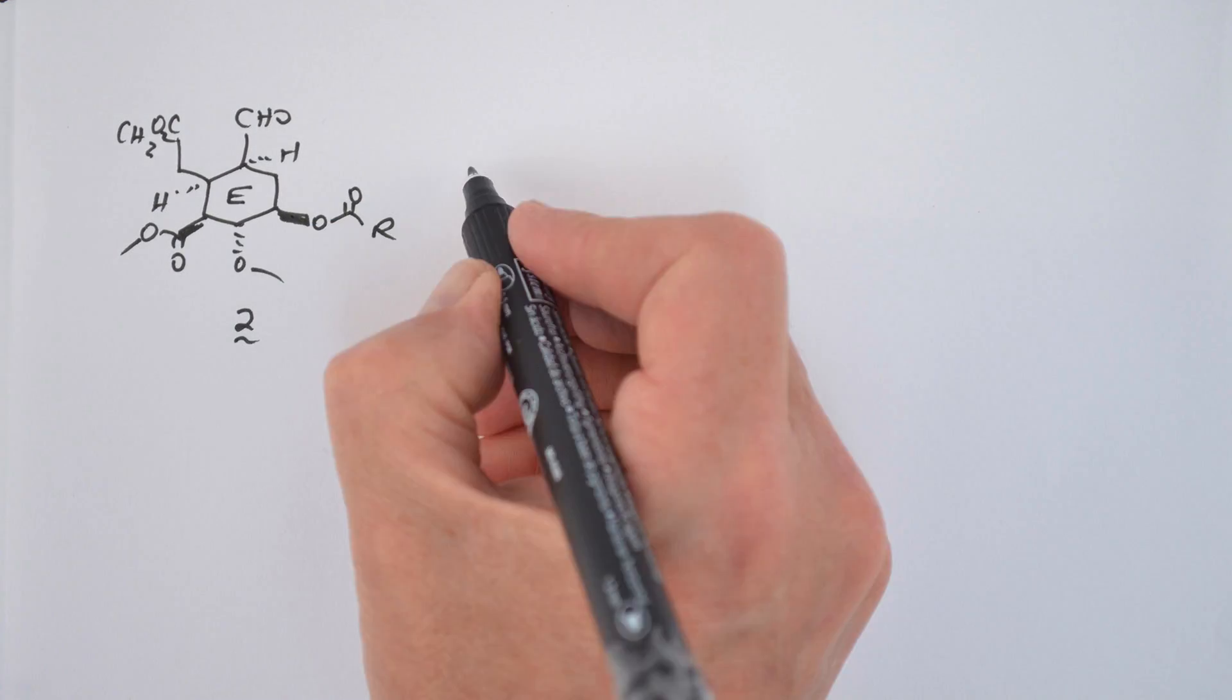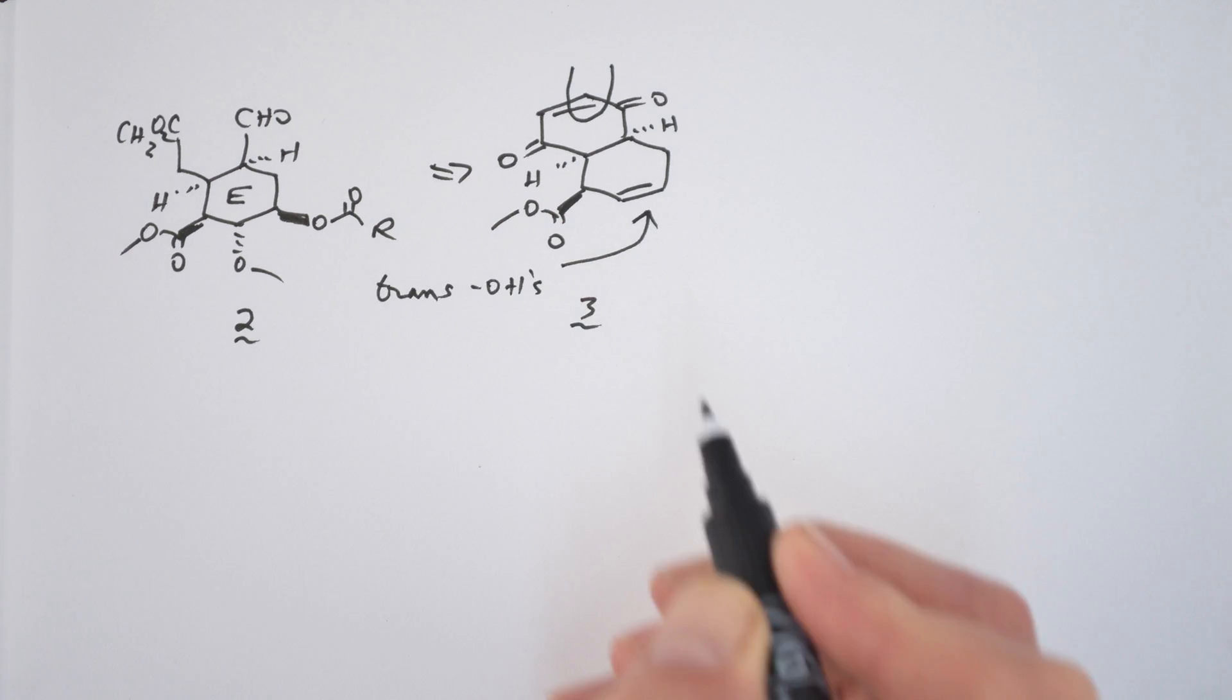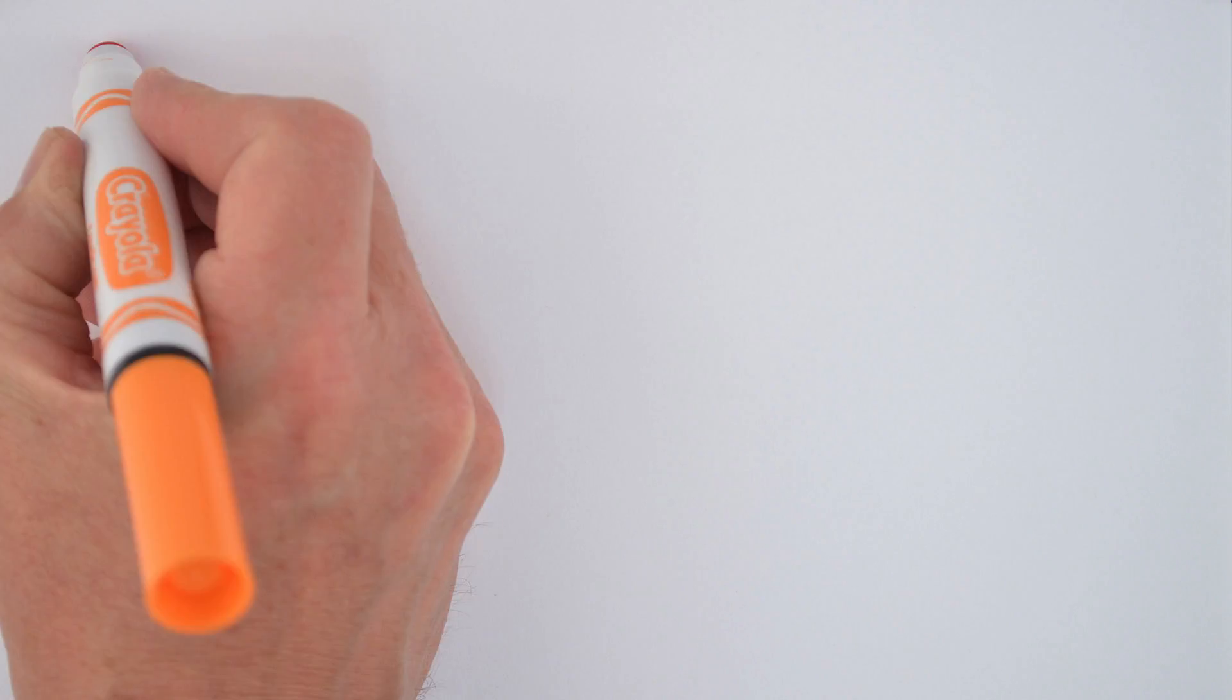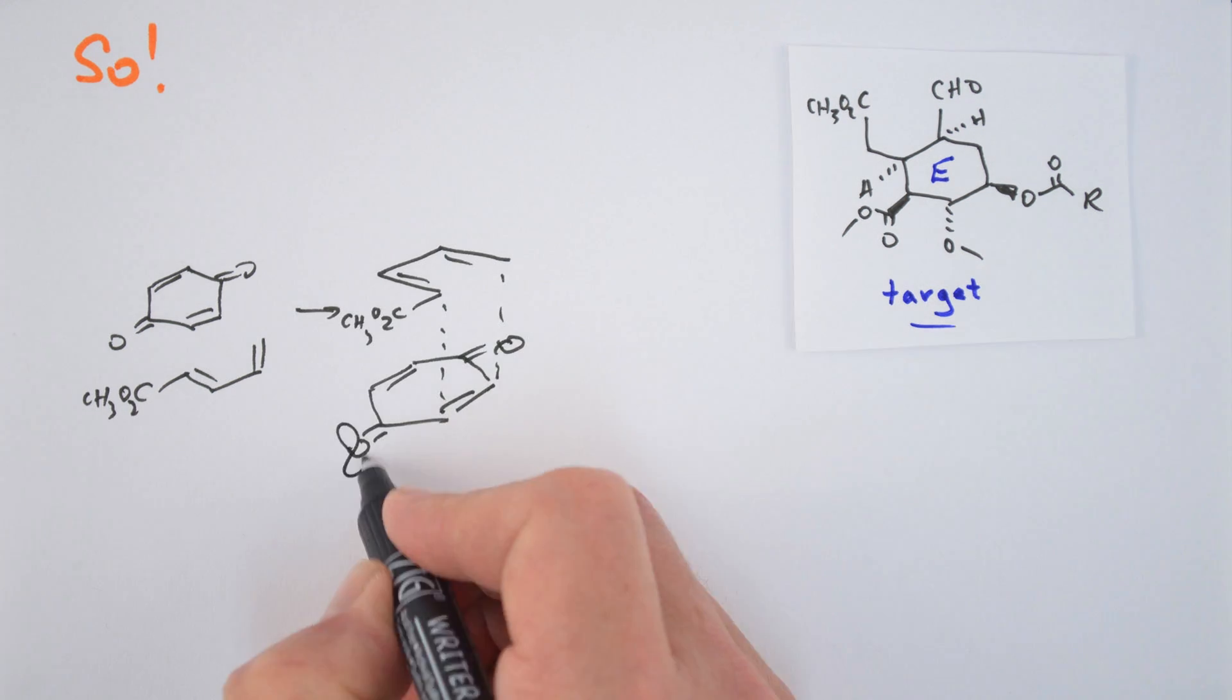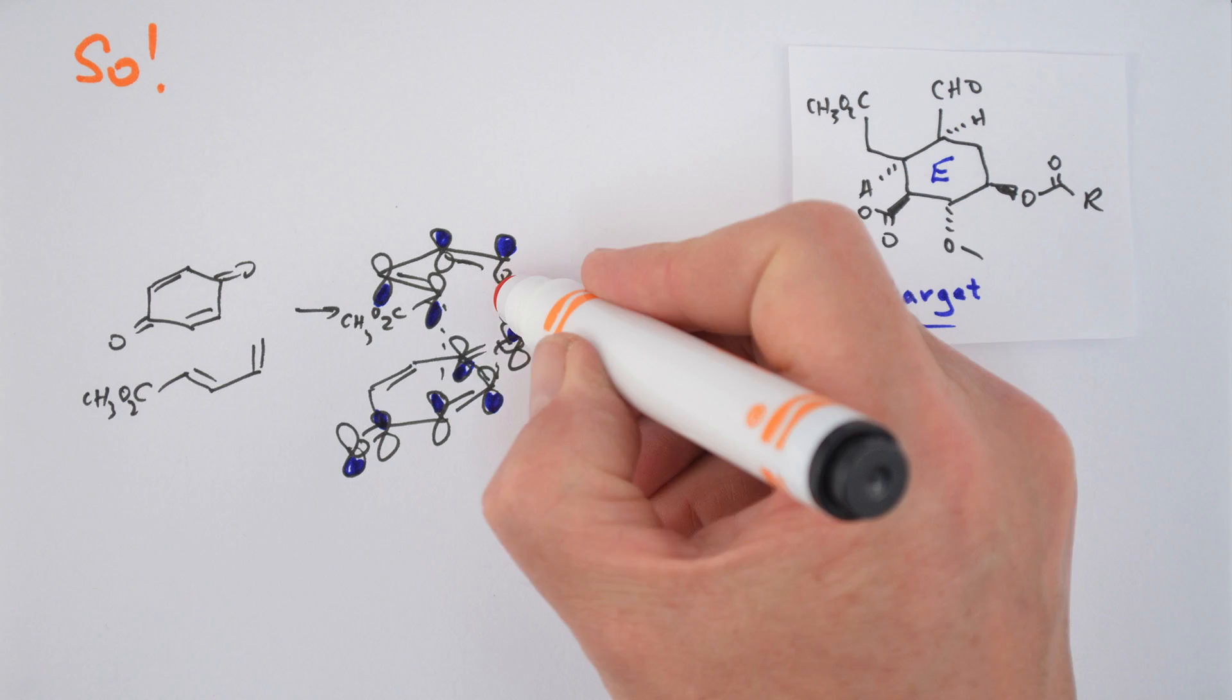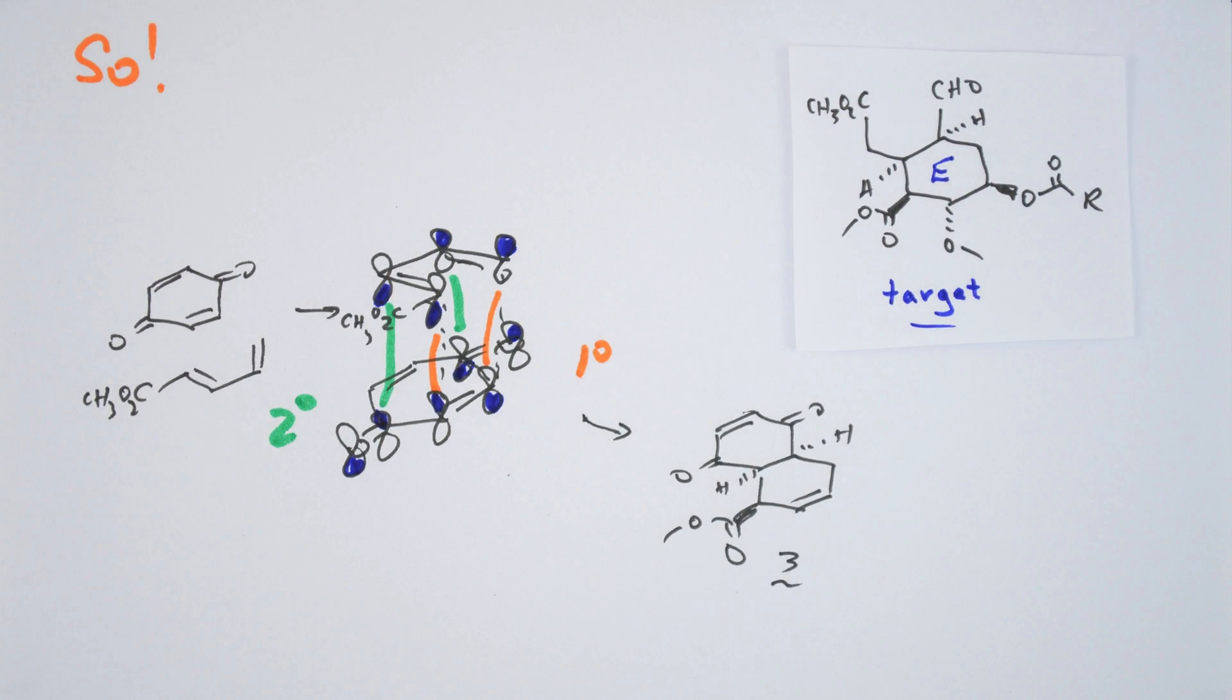Woodward envisioned that sub-target 2 would be available from compound 3, itself available from a Diels-Alder reaction after removing the circled carbon. So the synthesis starts with a Diels-Alder reaction between paraquinone and vinyl acrylic acid methyl ester. The Diels-Alder, as described in a previous video, proceeded by an endo transition state to establish three of the five chiral centers found in ring E. Also, the double bond in ring E could be used to introduce the remaining oxygen-containing functional groups in a trans fashion.